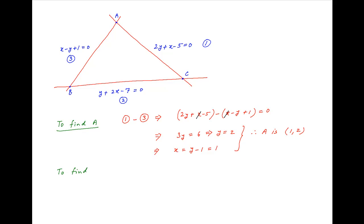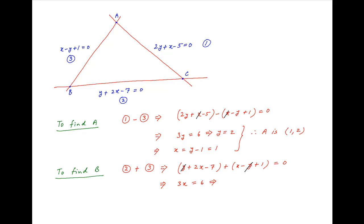To determine point B, we add equations L2 and L3: y plus 2x minus 7 plus x minus y plus 1 is equal to 0. On the left-hand side, y cancels and we are left with 3x equals 6, which implies x equals 2. Using equation L3, y equals x plus 1 equals 3. Therefore, the coordinates of point B are (2, 3).